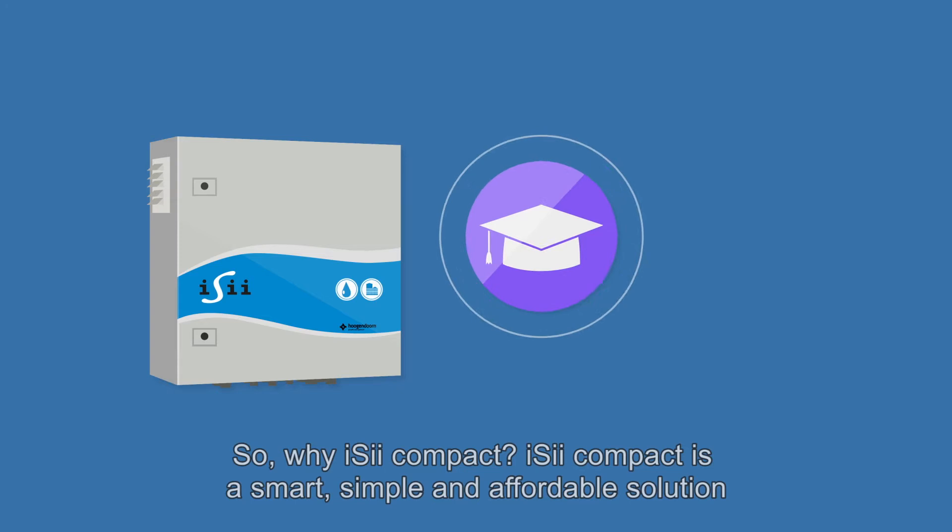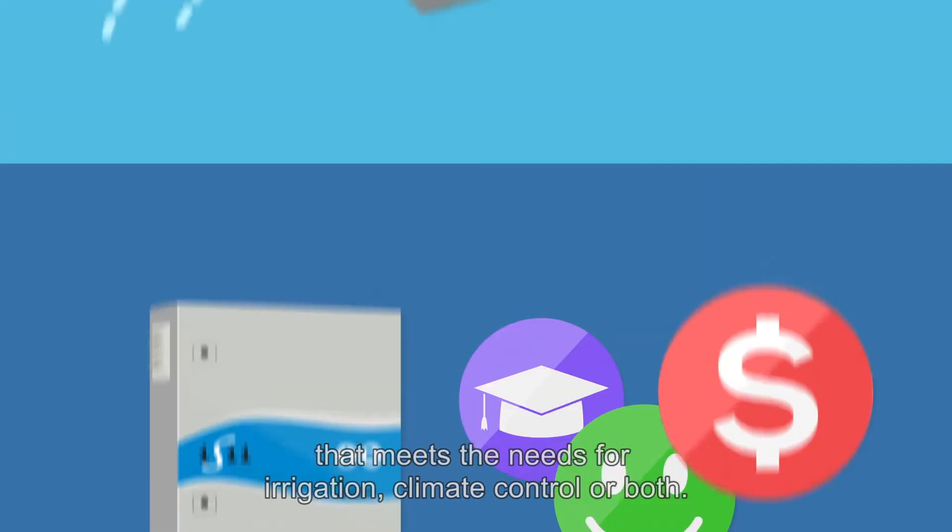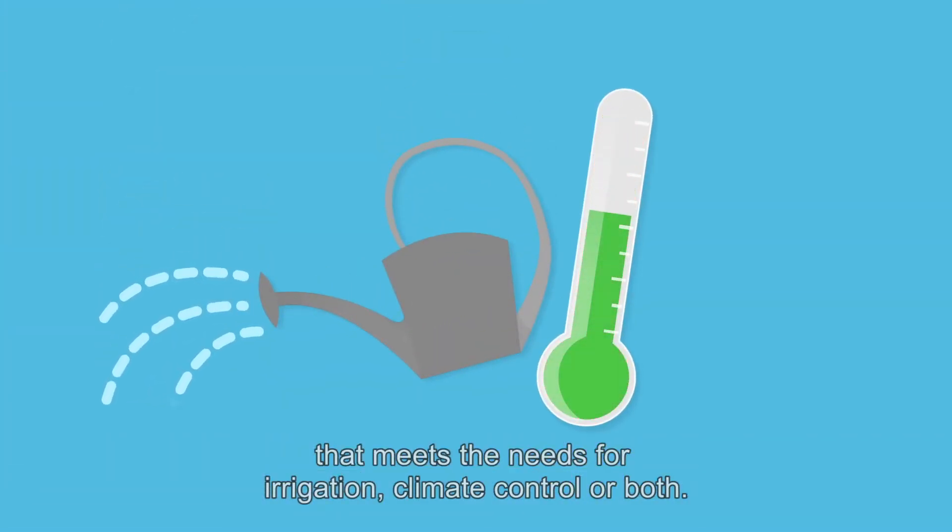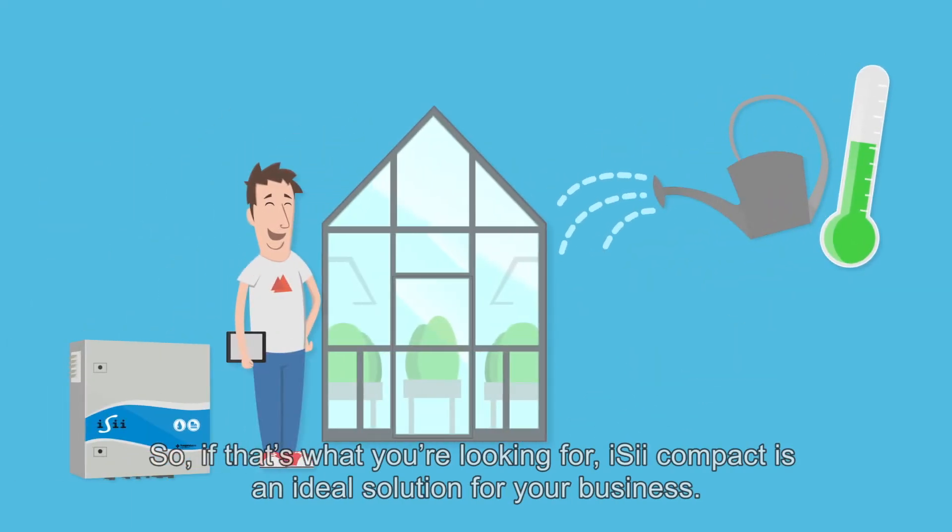Easy Compact is a smart, simple and affordable solution that meets the needs for irrigation, climate control or both. So if that's what you're looking for, Easy Compact is an ideal solution for your business.